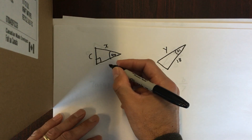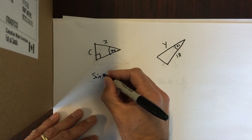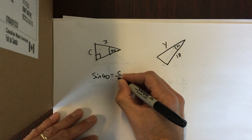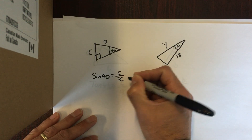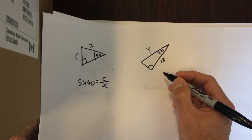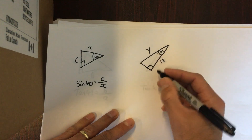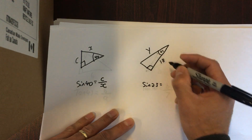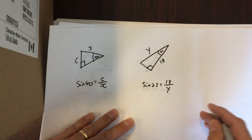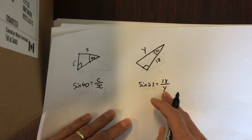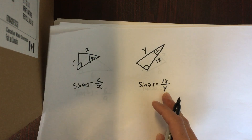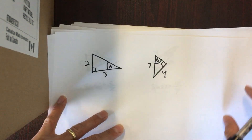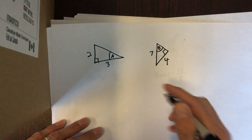Over here the opposite is C and the hypotenuse is X. It is sine that involves opposite and hypotenuse. On this next one we have the adjacent side and we're looking for the hypotenuse. The sine of this angle equals adjacent over hypotenuse. Given that it's the hypotenuse we're looking for, it shows up on the bottom, and an extra step will be required to solve it.